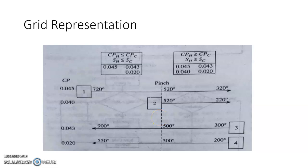The grid diagram uses actual temperatures, not shifted temperatures. I think I forgot to mention this in earlier videos, but the shifted temperatures used in PTA analysis help identify the pinch point and minimum utilities. When we construct the network, actual temperatures come into picture.